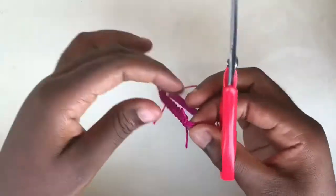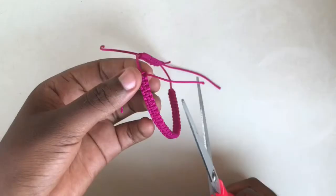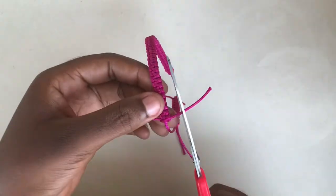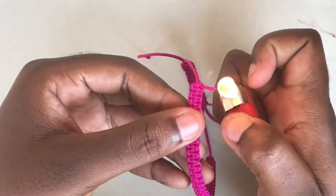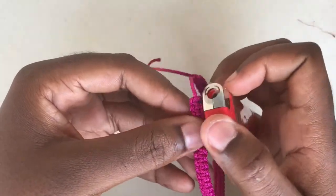Now I'm going to cut the excess cord, but be careful you don't cut the middle one. Then melt the ends with a lighter as you can see in the video.